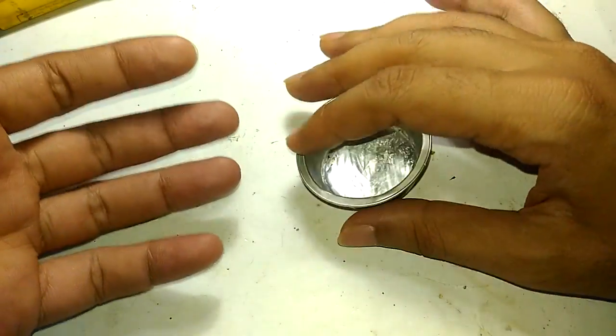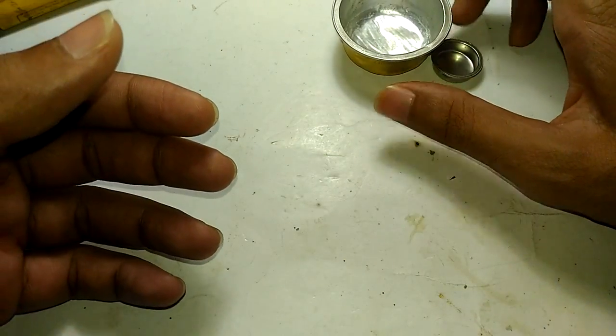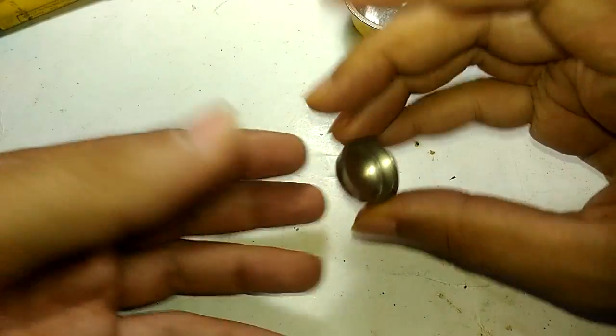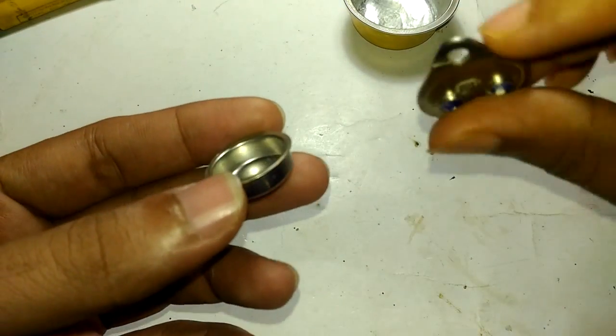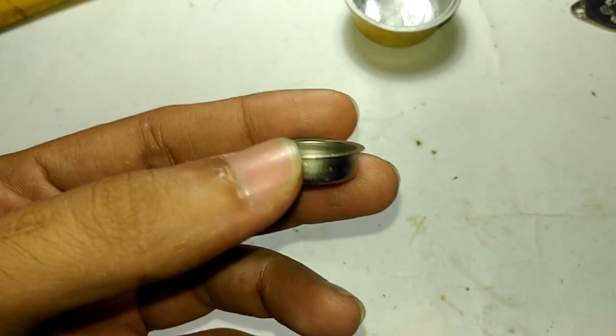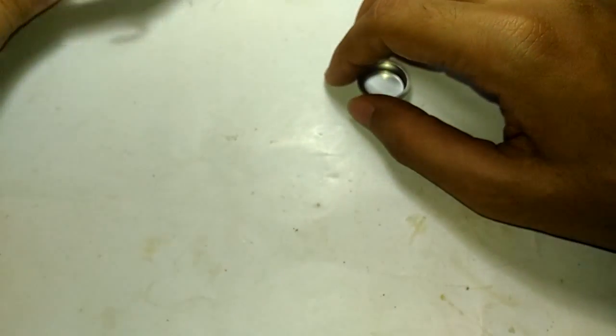So with what we have, let's build one ourselves. For this you only need a TO3 transistor like this, you need to take apart the top can, and you need a soldering iron.